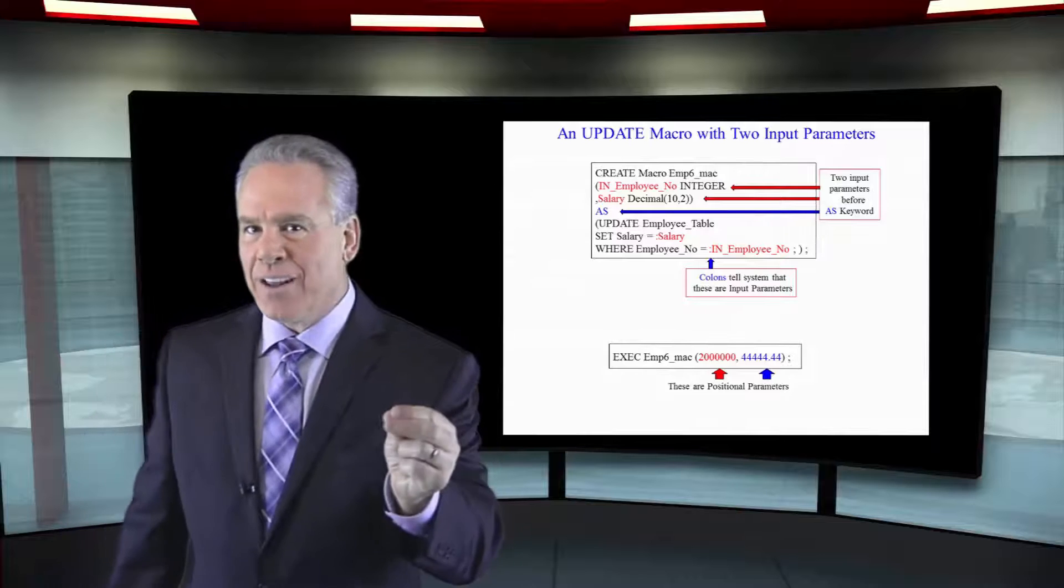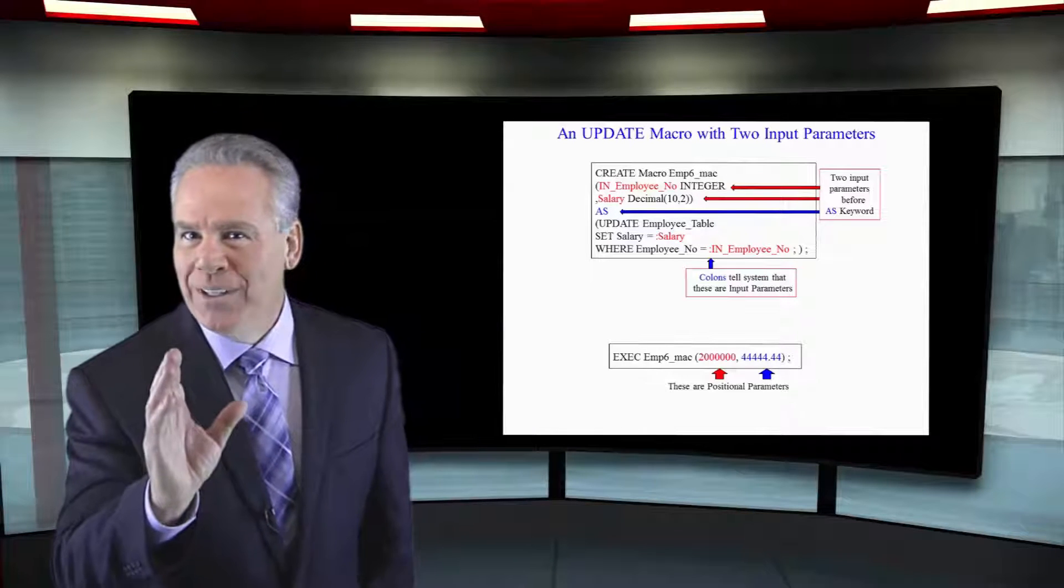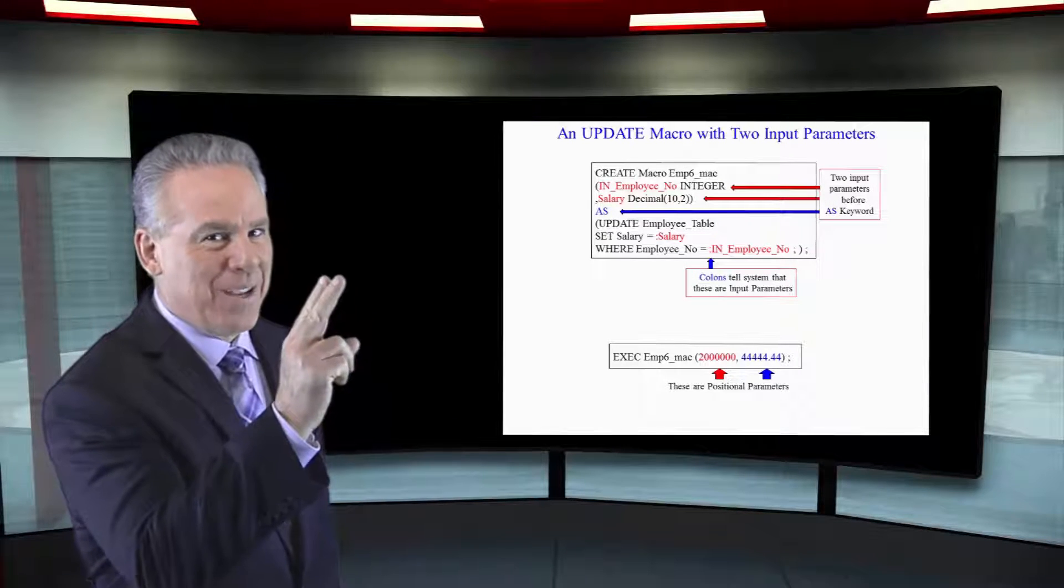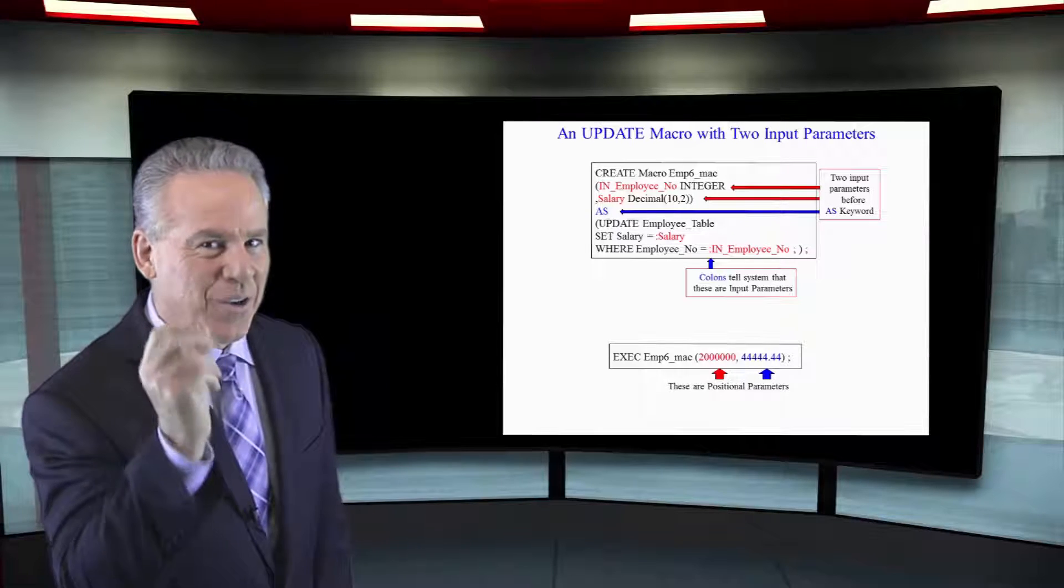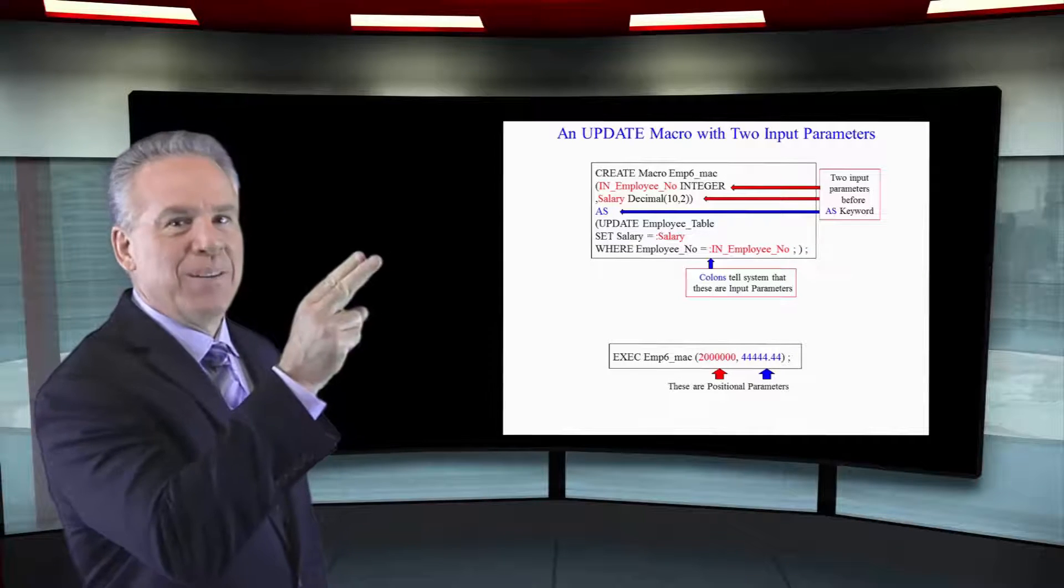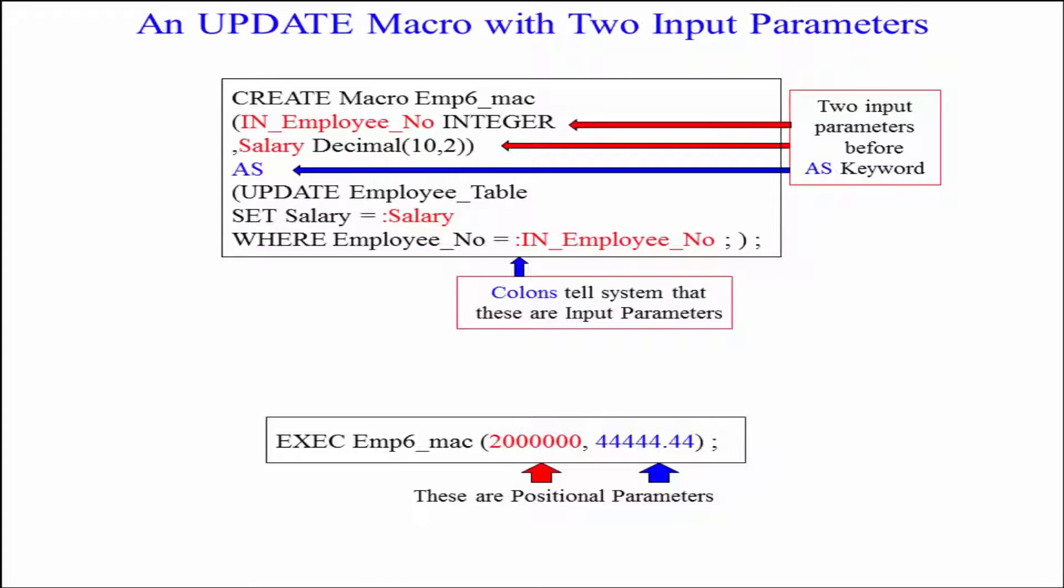set salary equal to colon salary as in the variable coming in. Anytime you see that colon you go that's input, those are parameters being passed in where employee number equals colon IN_Employee_No. So I can actually name my variables the same column names as in the real table and it's no issue.